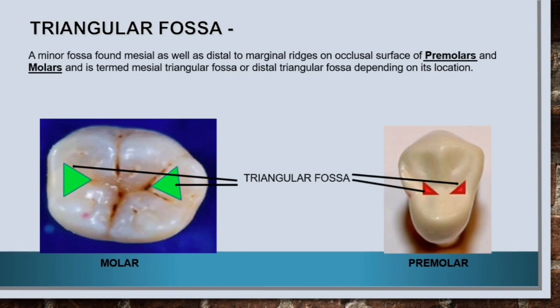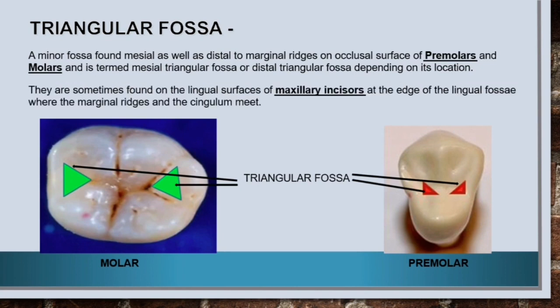Triangular fossae are sometimes also found on the lingual surfaces of maxillary incisors at the edge of the lingual fossa, where the marginal ridges and the cingulum meet.